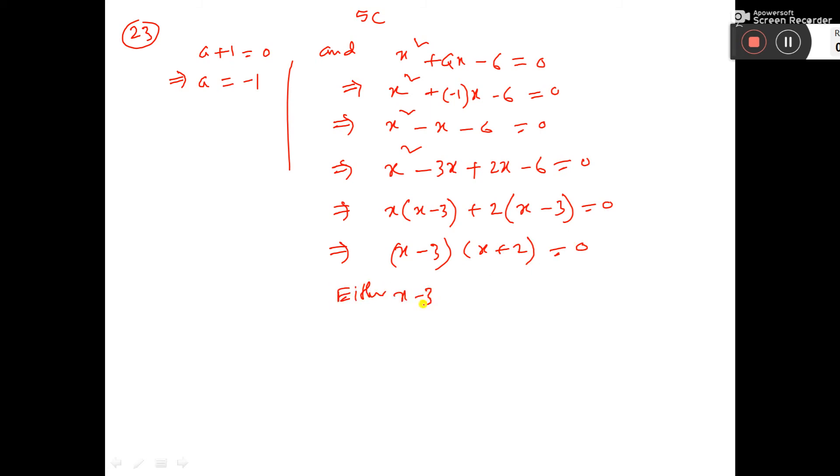Now either x minus 3 equal to 0 or x plus 2 is equal to 0. That means x is equal to minus 2 and x equal to 3. This is one answer and this is another answer.